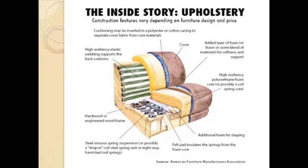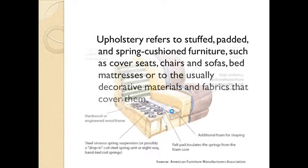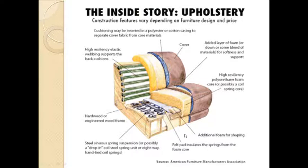The life of the furniture depends specifically on these structural components. Apart from that, you can see the felt pad insulator that covers the spring. There is a joint between the two wooden frames — one vertical and one horizontal — and in order to provide extra support so that it can maintain its shape, additional foam is provided at those joints.